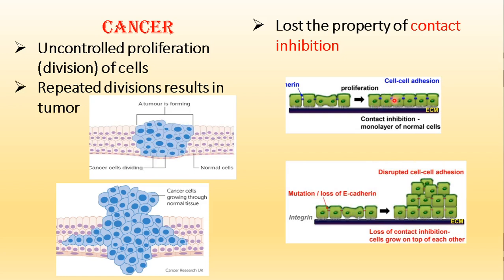Sometimes cells lose this property due to wrong signaling or due to mutation. The chemical involved — E-cadherin — gets lost due to mutation of some genes, resulting in loss of contact inhibition property. As a result, cell-to-cell adhesion is disrupted, a gap is created between cells, that attachment is lost, and the cells go on dividing in an uncontrolled, unorganized manner, finally resulting in the formation of tumors.